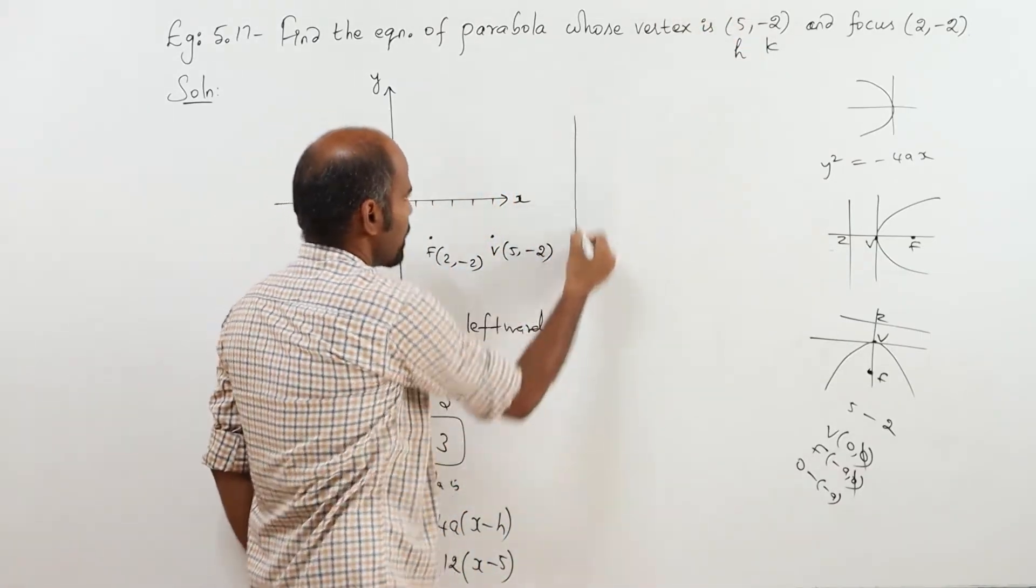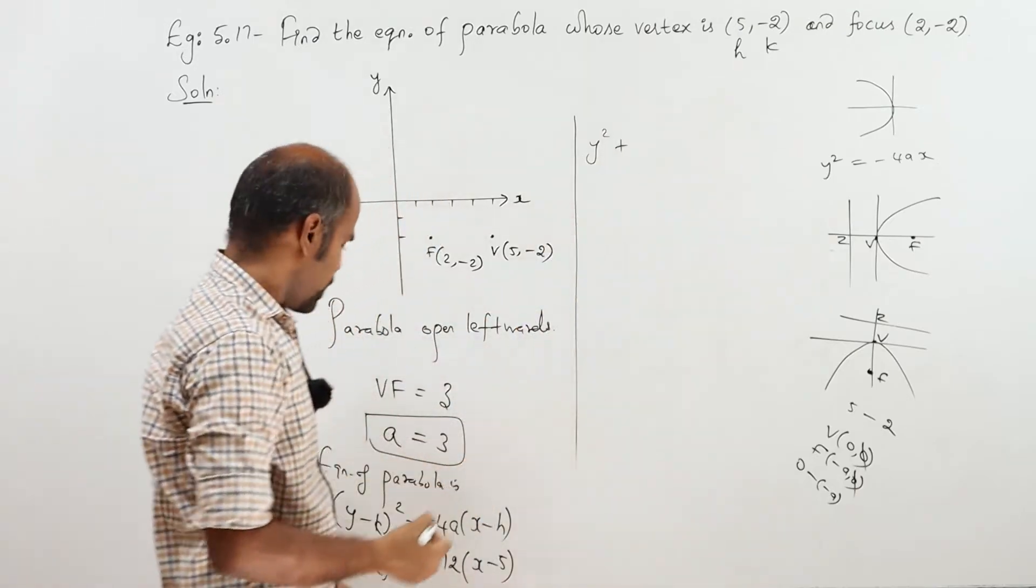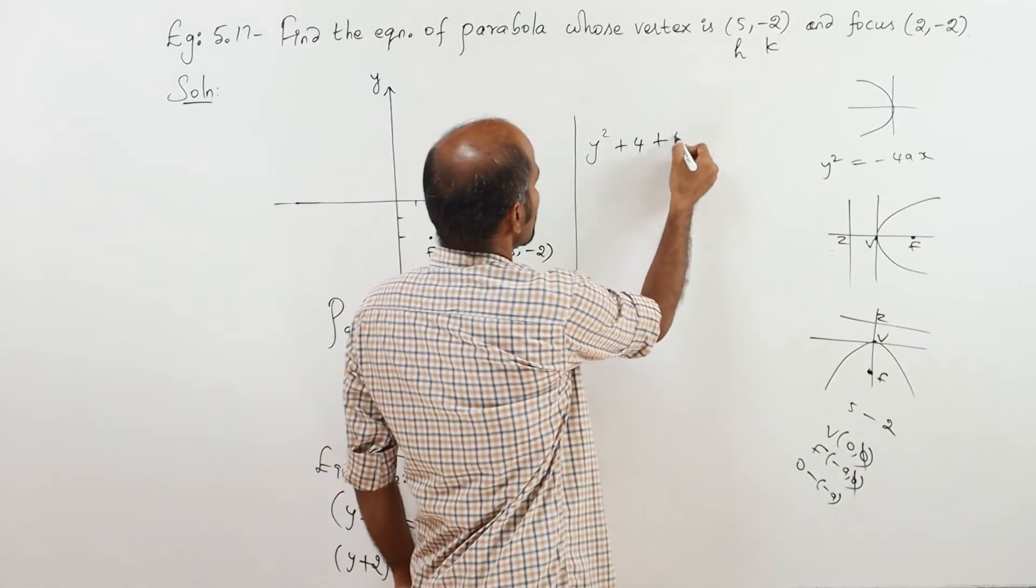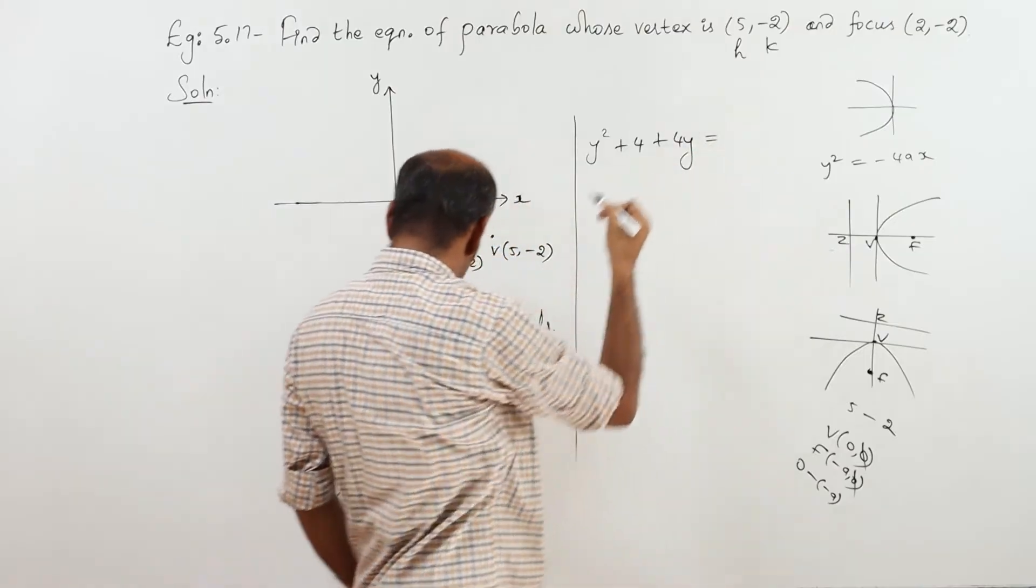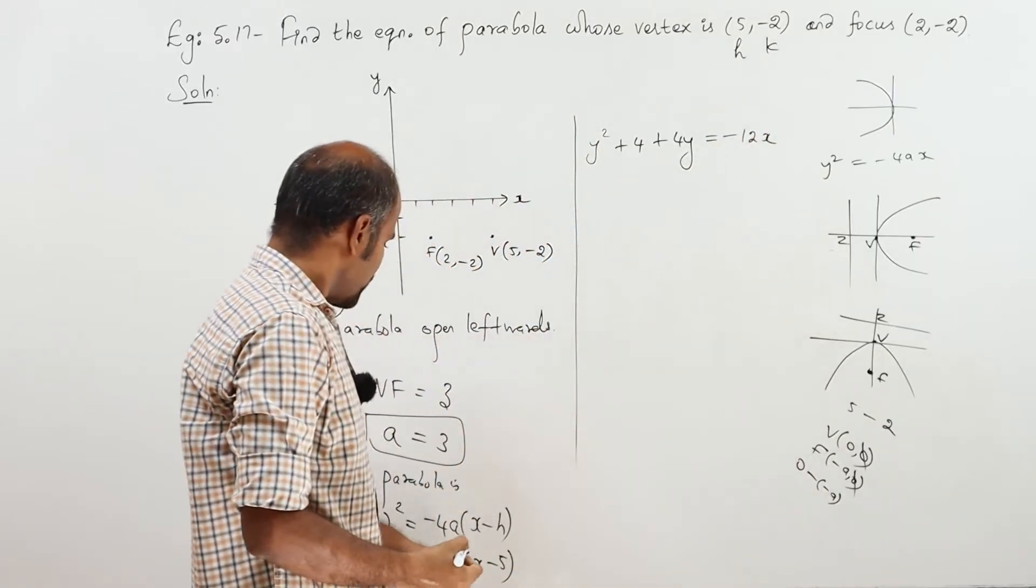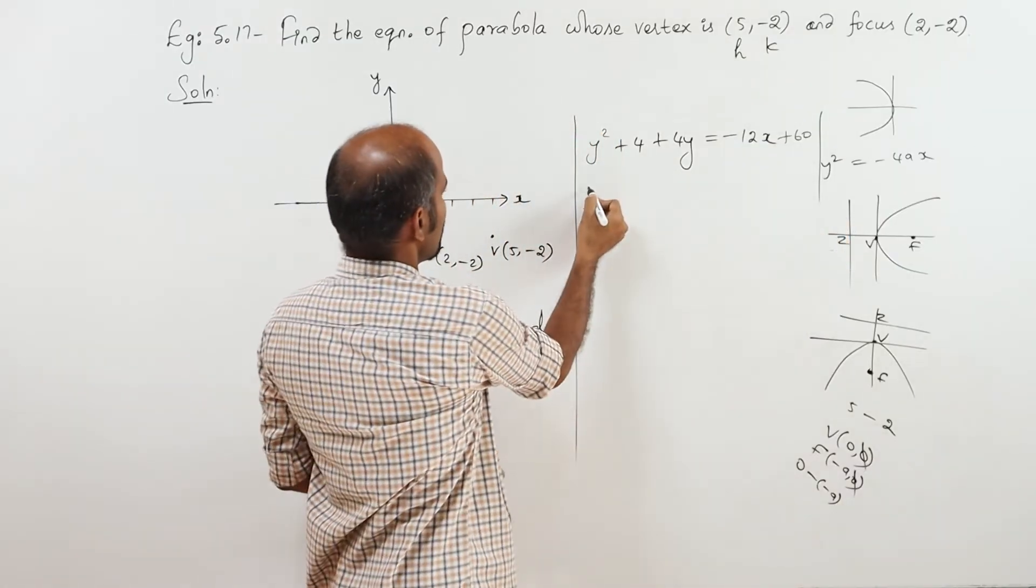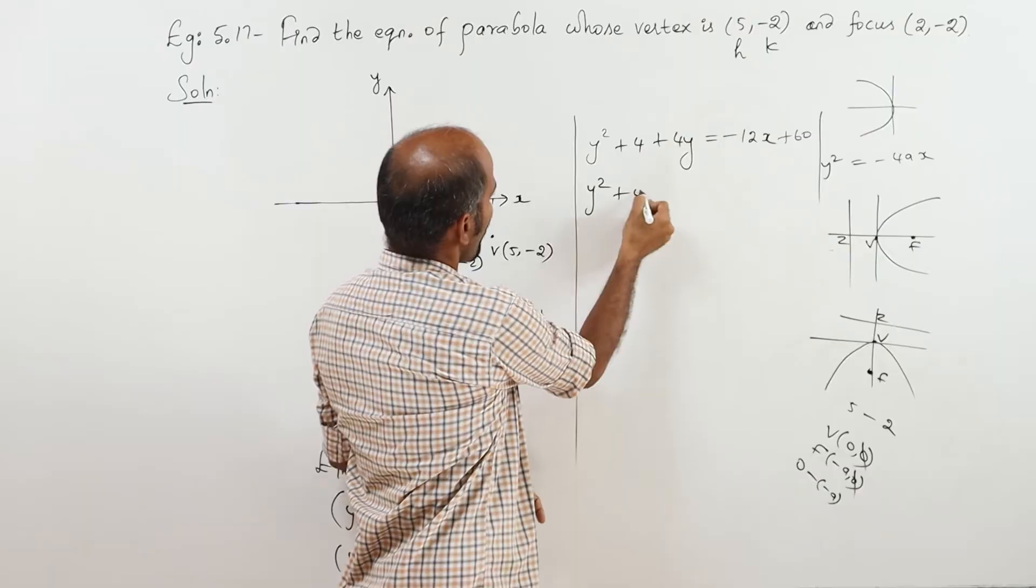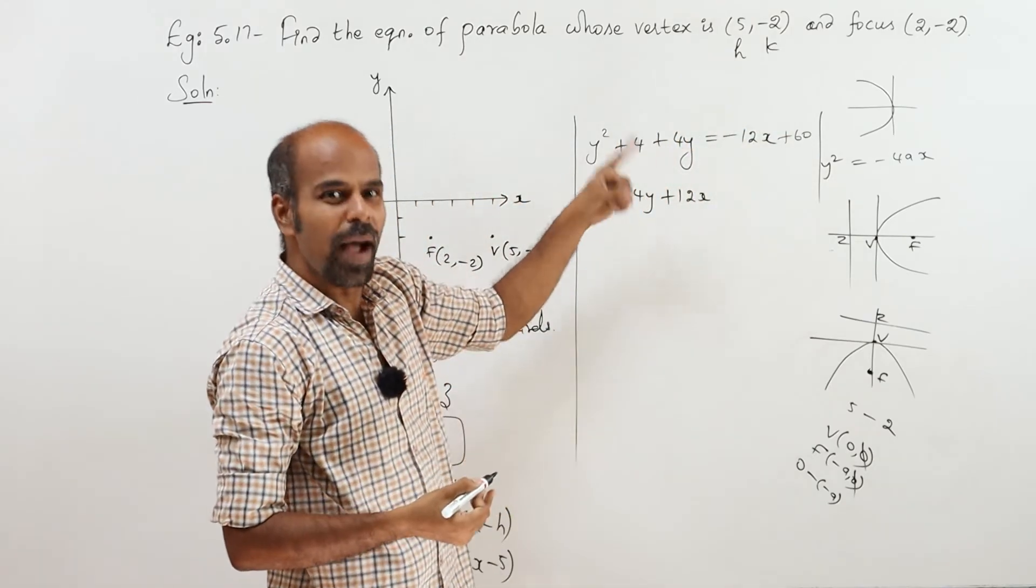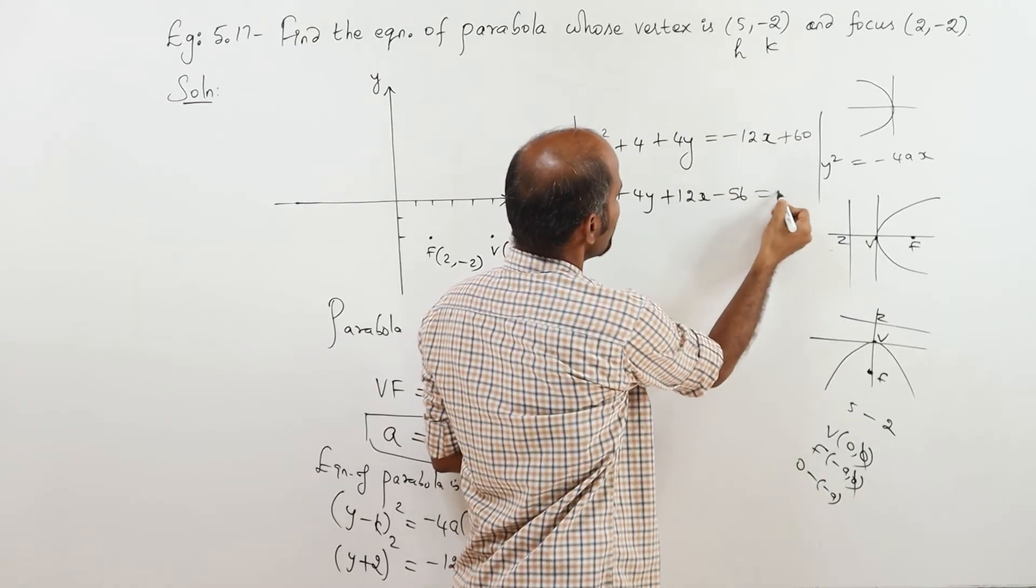Simplify pannikla. A plus B whole square is A square plus B square plus 2AB. Y square plus 4Y minus 12X plus 60. Y square plus 4Y minus 12X plus 60 minus 60 plus 4 minus 56 equal to 0.